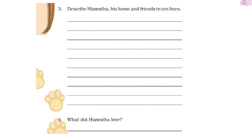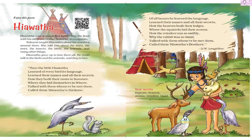Hiawatha was a young Red Indian boy. He lived with his old grandmother Nokomis in a wigwam. Now we know who Hiawatha was and where he lived. Nokomis taught Hiawatha about the wonders around them. She told him about the stars, the trees, the insects, the birds, the animals, and many other things.